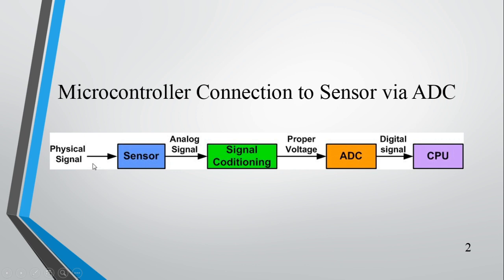The temperature sensor will sense this physical quantity. Generally, the sensor will be giving an analog signal output. That analog signal corresponding to the sensor will be sent to a signal conditioning unit, which will condition the signal — it will remove the noise and the proper analog voltage will be given to the ADC. ADC stands for analog to digital converter. The analog signal will be converted to its corresponding digital format and will be connected to the CPU. CPU is nothing but a complex digital device which can accept only digital signals.